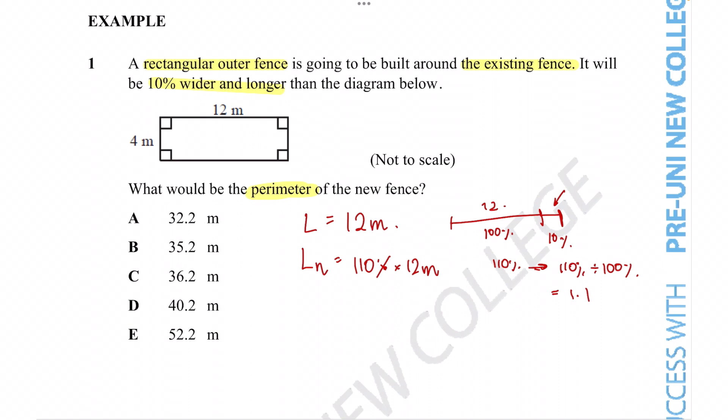That means we can go ahead with the multiplication: 1.1 times 12 meters, and that gives us the new length as 13.2 meters.